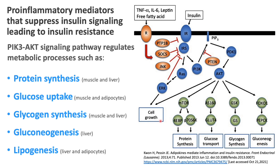Let's turn our attention to this receptor here — this is where the pro-inflammatory mediators will bind. TNF-alpha and interleukin-6, when they bind, also trigger a cascade of events and downstream messengers. These downstream messengers impair and impede on insulin's secondary messengers as well. When this happens, it will jeopardize these mechanisms, affecting protein synthesis, glucose transport, glycogenesis, gluconeogenesis, and lipogenesis.